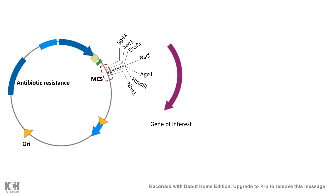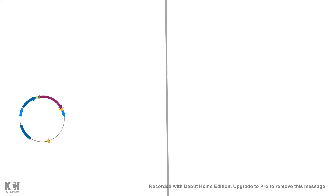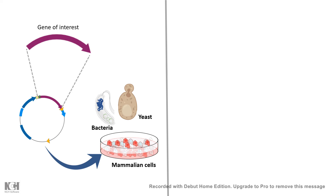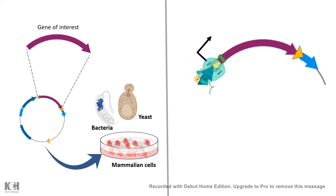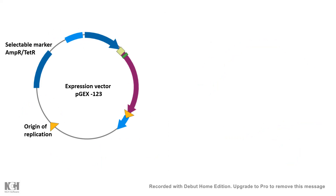The multiple cloning site has several restriction enzyme sites where you can do restriction digestion and allow your gene of interest to be integrated into that region. But importantly, since you need the protein to be expressed inside bacteria, yeast, or mammalian cells, you need an appropriate promoter so that RNA polymerase can bind, transcribe, and the mRNA can be translated.